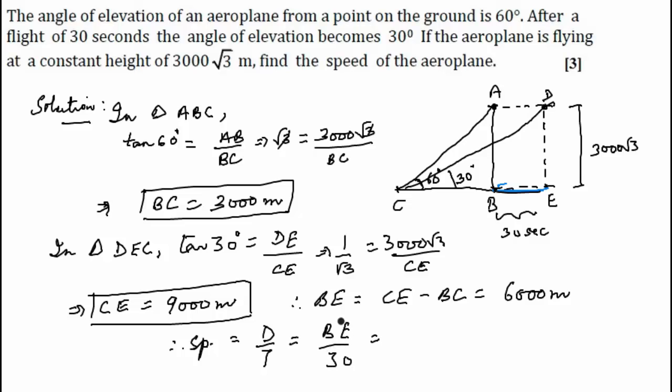That is 6000 upon 30 meters per second, which cancels out to become 200 meters per second. We can leave our answer in meters per second, and if you want, you can convert the answer to kilometers per hour also.